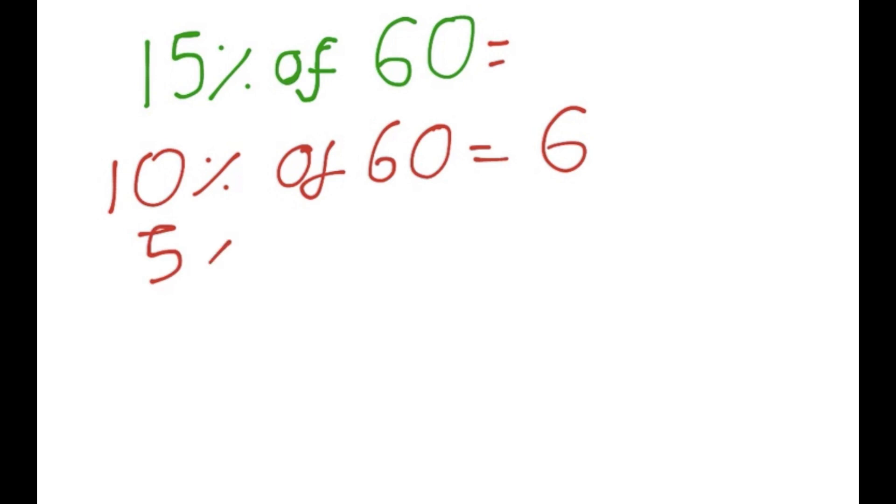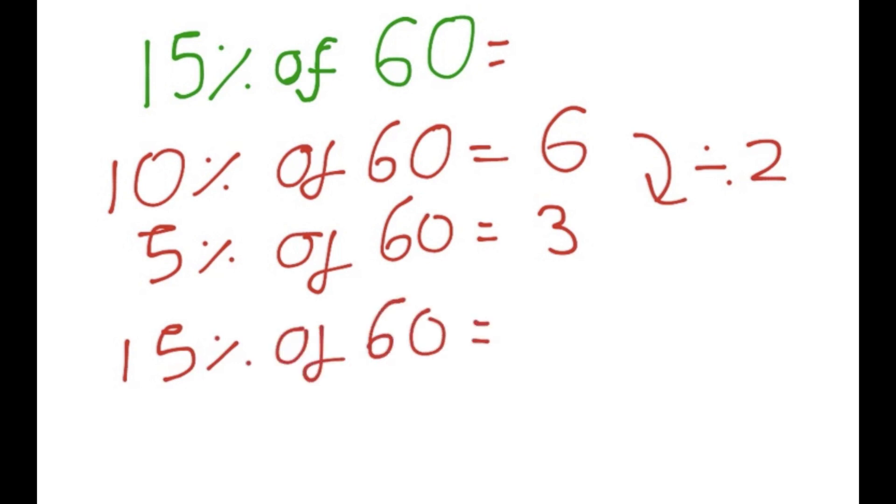And now we'd find 5% of 60, which is just half of 10%. So we divide by 2 and we get 3. And therefore, 15% will just be the total of 10% of 60 and 5% of 60. So that's 6 plus 3. And we would get 9. And there we have it. That's our answer.